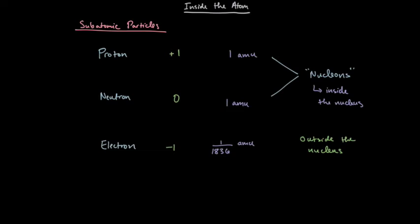Next, we take a look at what's inside the atom. We start with these subatomic particles: the proton, the neutron, the electron. And their charge is as follows. Proton is a positive one. Neutron has no charge. Electron has a negative one charge.